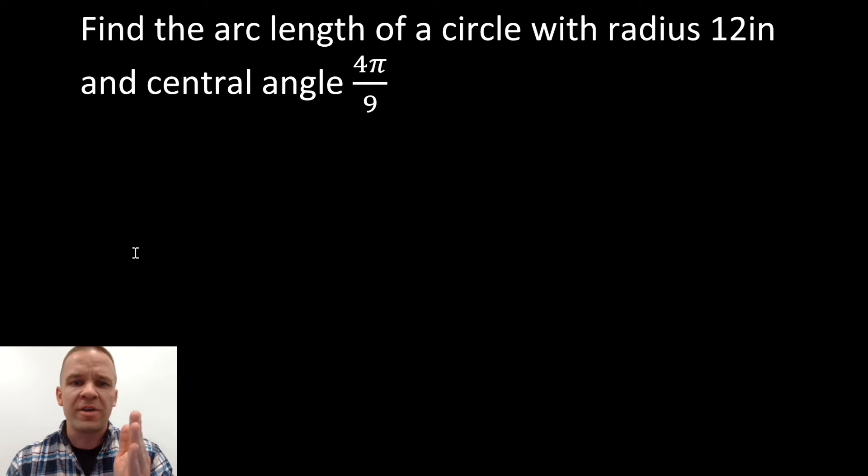Oh, love me some arc lengths. Alright, find the arc length of a circle with a radius of 12 inches and a central angle of 4π over 9.